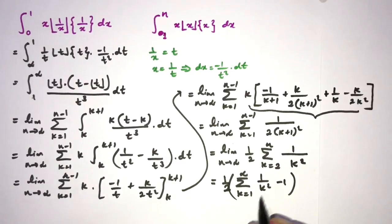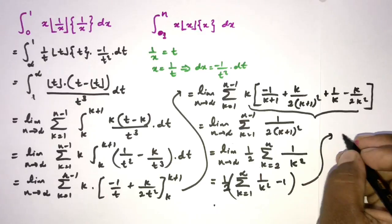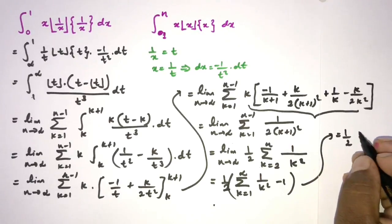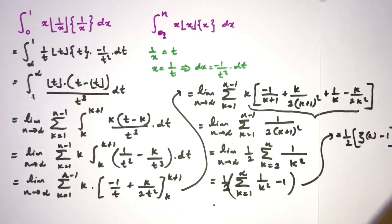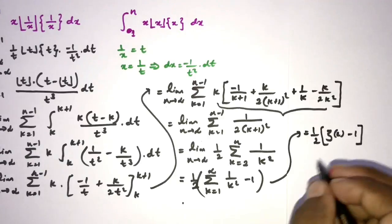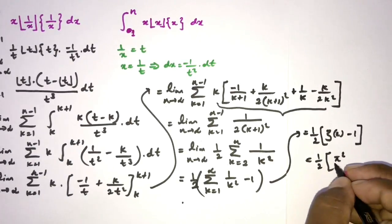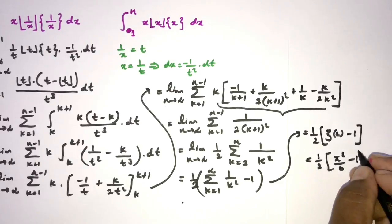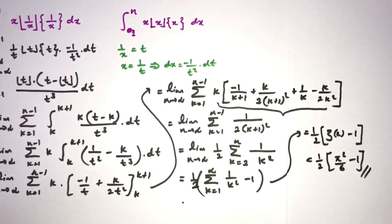This is equal to the Riemann zeta function. We have (1/2)(ζ(2) − 1). Since ζ(2) = π²/6, the final answer is π²/12 − 1/2. This is the answer for this integral. If you like this type of video, please subscribe to this channel. Thank you for watching.